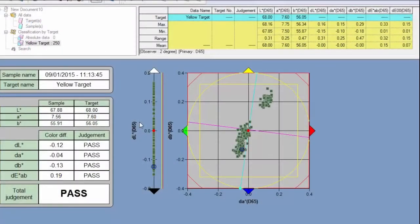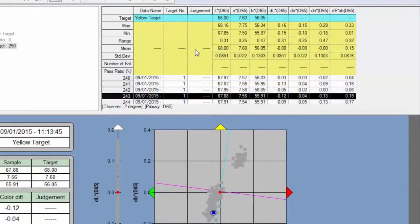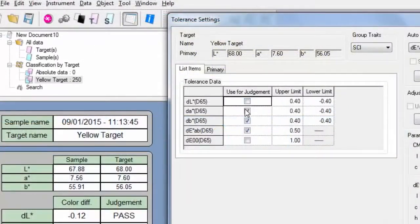Create virtual targets by averaging a range of samples. Tolerance settings and various search functions allow you to set up conditions that quickly extract the closest color match.